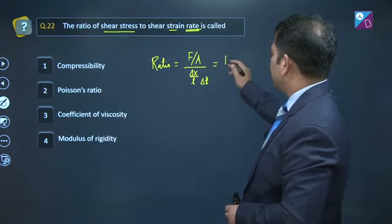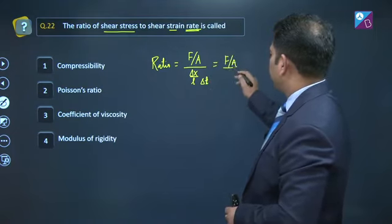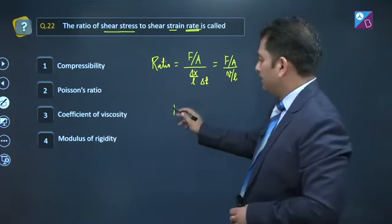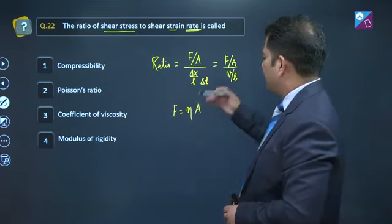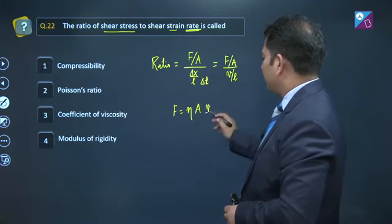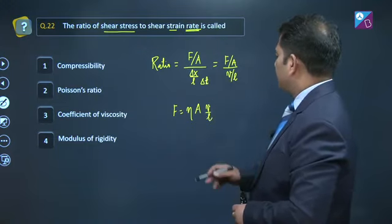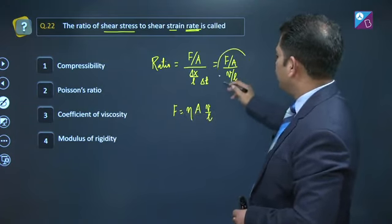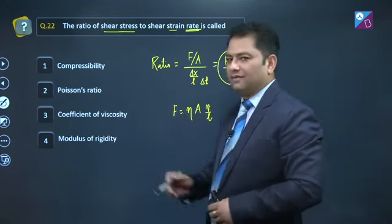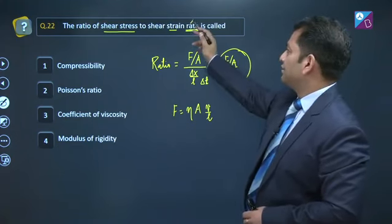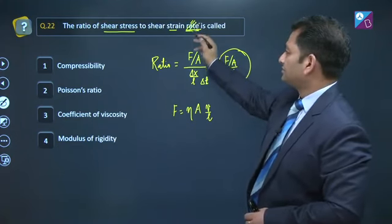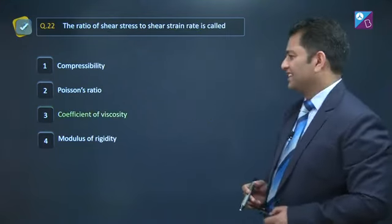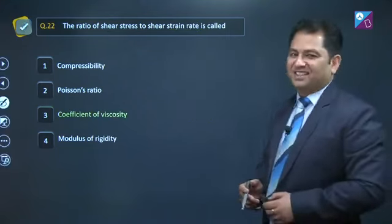Now you could say this is f by a upon v by l. Yaad kijiye f equals to eta a dv by dl hai, usko roughly mein agar v by l likh dun, toh eta will be f by a upon v by l. Yani ki yehi hai coefficient of viscosity. Agar yeh shabd nahi hota, rate, then the answer would have been modulus of rigidity. So filhal ke liye it's coefficient of viscosity.